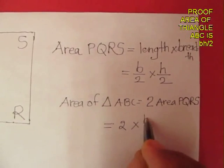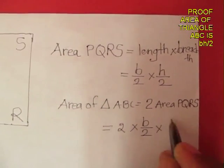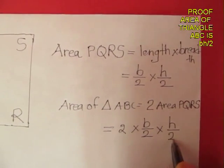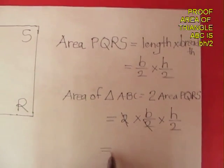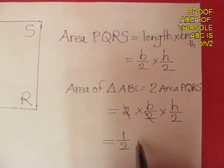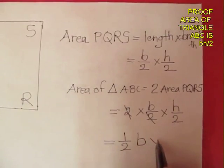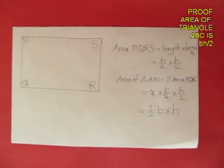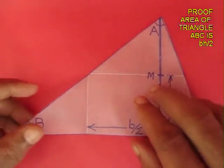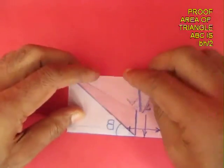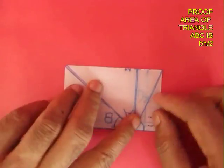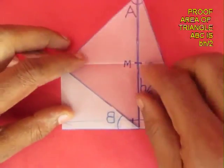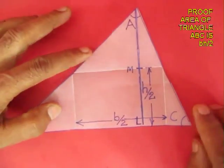Two times, or 2 into b by 2 into h by 2. Or the area of the triangle ABC would be half b into h, or base into height. Area of the triangle is half b into h, which you can visually see in this very simple mathematical activity.